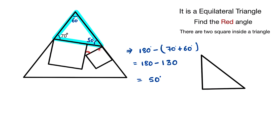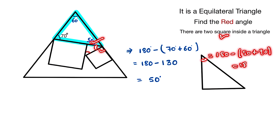Now we extract this triangle from the figure. It looks like this: here, this angle is 90 degrees because of the square, and this one is 50 degrees. So we can now easily find the remaining angle in this triangle.